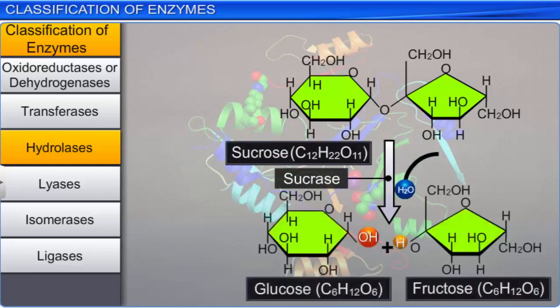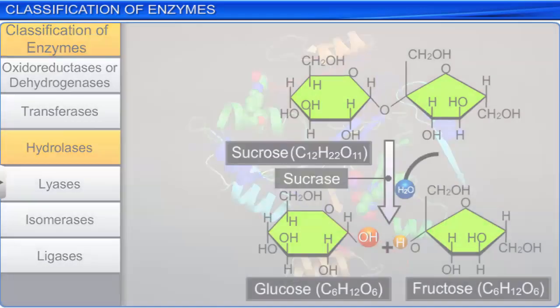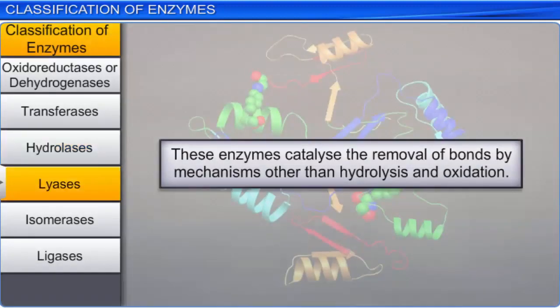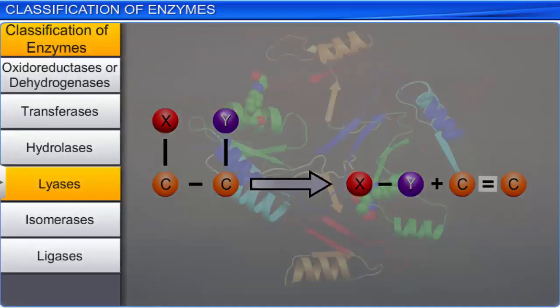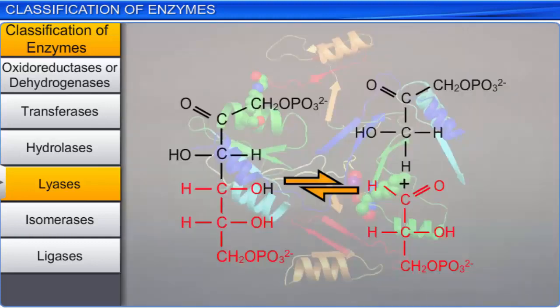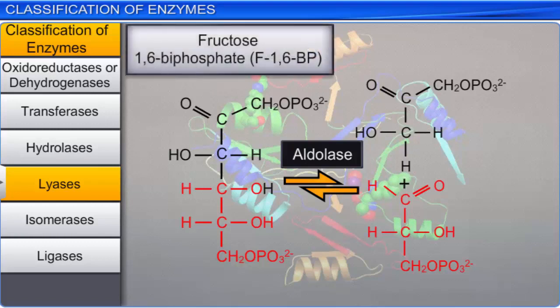Lyases comprise the fourth class of enzymes that catalyze the removal of bonds by mechanisms other than hydrolysis and oxidation. Lyases use mechanisms such as forming double bonds or a new ring structure for catalysis. An example is aldolases, which cleaves the aldol groups in fructose 1,6-bisphosphate and forms dihydroxyacetone phosphate and glyceraldehyde-3-phosphate.